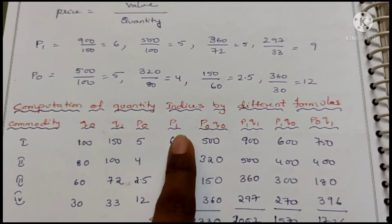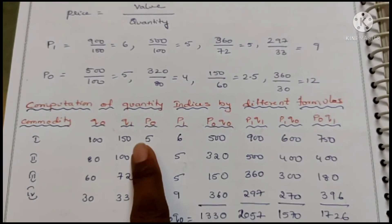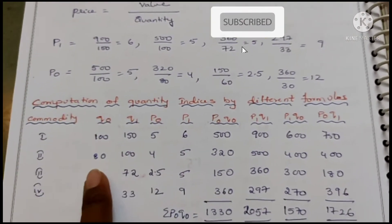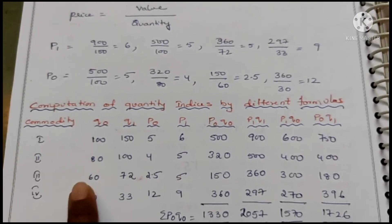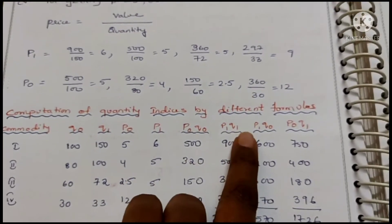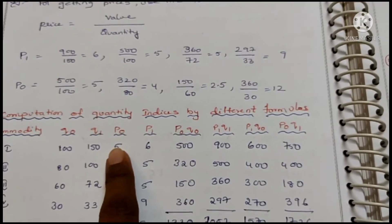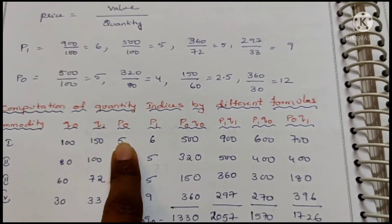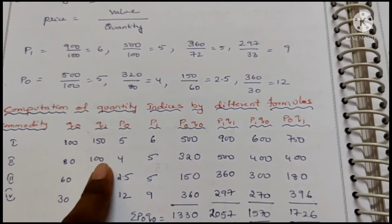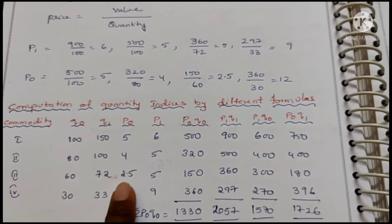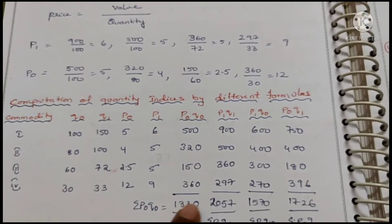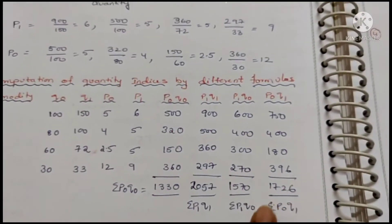For P1Q0: 6×100=600, 5×80=400, 5×60=300, 9×30=270. For P0Q1: 5×150=750, 5×100 (approx), 72×25=180 (approx), 33×12=396. Now add all four columns to get the sigma totals needed for the index number formulas.